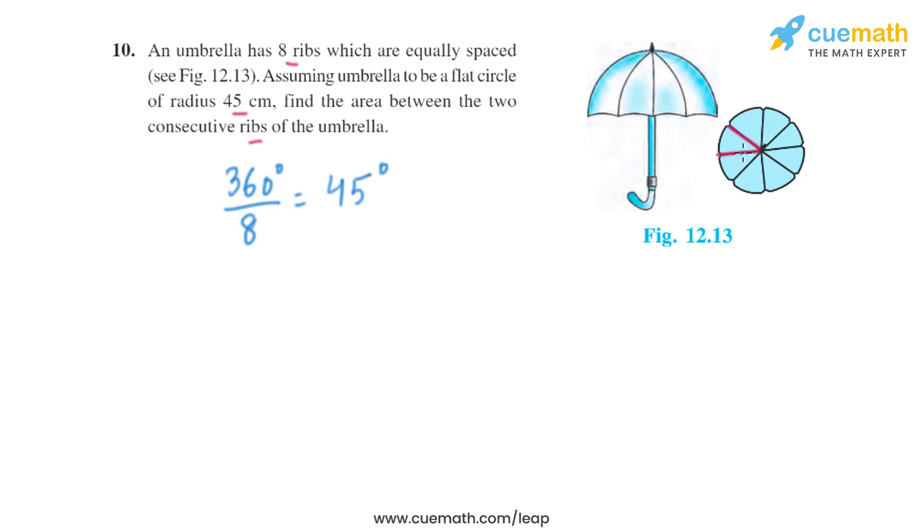So one sector will subtend an angle of 45 degrees. Now we have to find the area of the sector which is subtending an angle of 45 degrees. We know the formula to find the area of a sector: that is theta divided by 360 degrees multiplied by pi r squared.